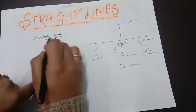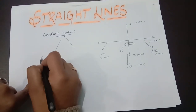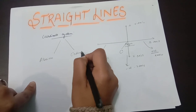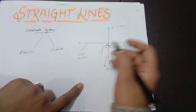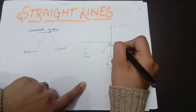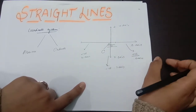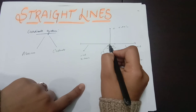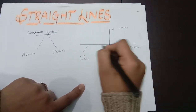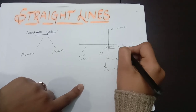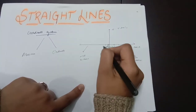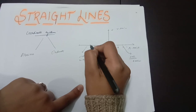Now let's talk about the coordinate system. The coordinate system is made in two parts: the first part is the abscissa and the second part is the ordinate. Starting from the origin at 0, we move towards the positive x-axis: 1, 2, 3, 4, and so on — these are the units. Similarly, towards the negative x-axis: minus 1, minus 2, minus 3, and so on.